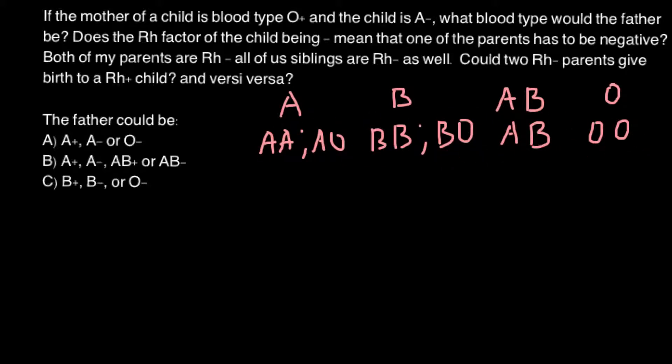So six genotypes make four phenotypes. Now we are ready to solve our problem. I would also like to note that the Rh factor is independent of the ABO blood group system. The Rh factor was first found in monkeys and then it was found in human blood.